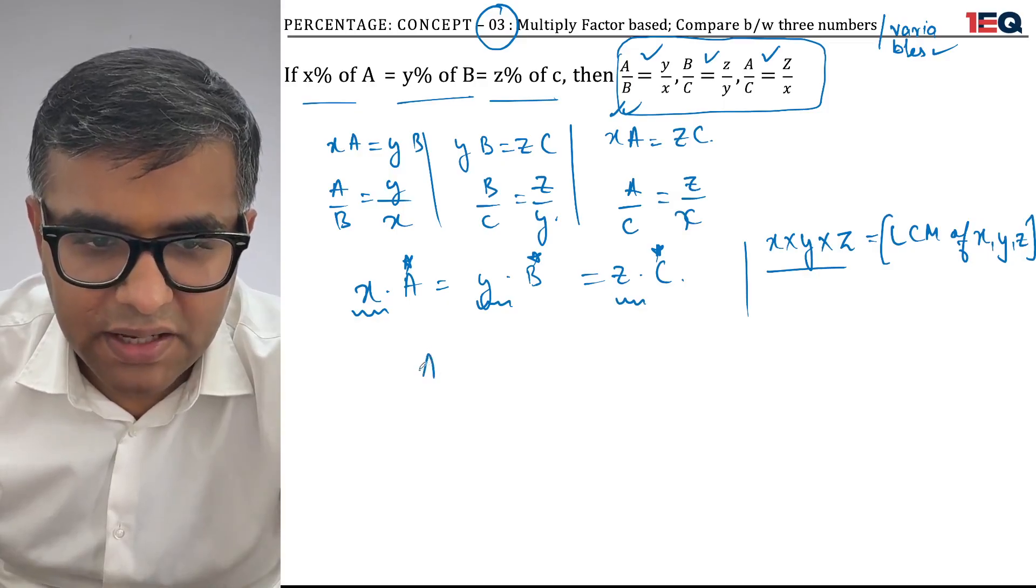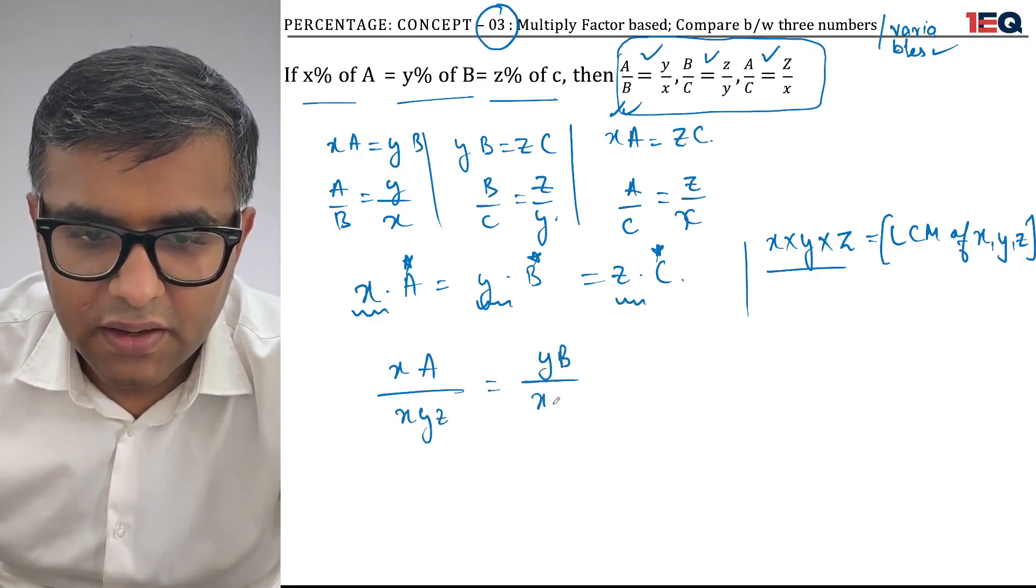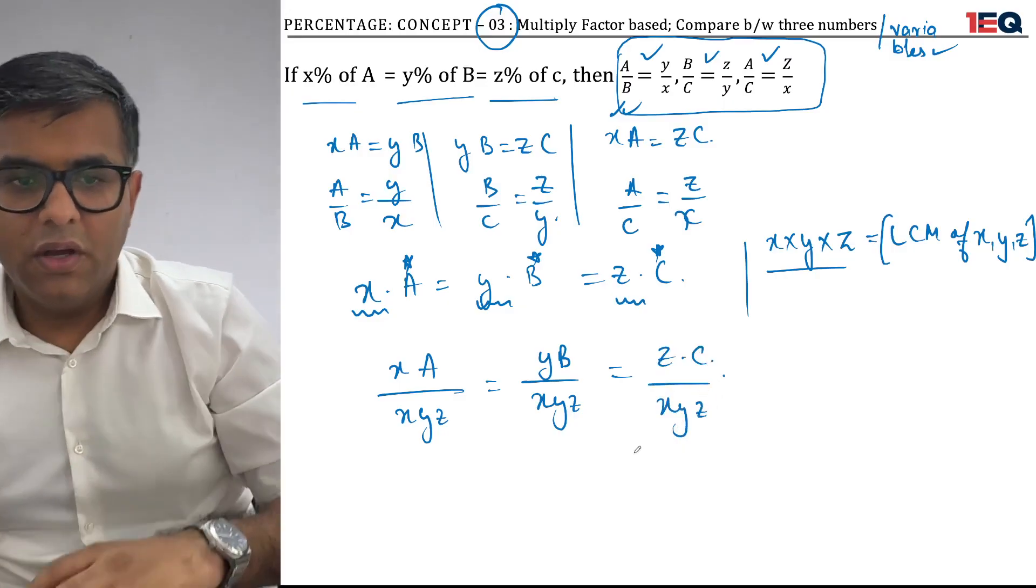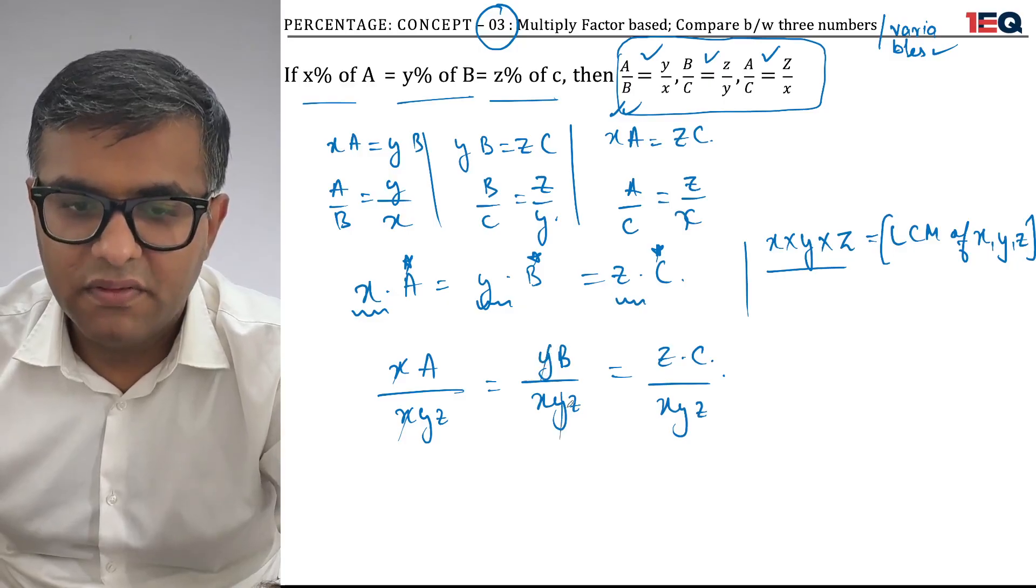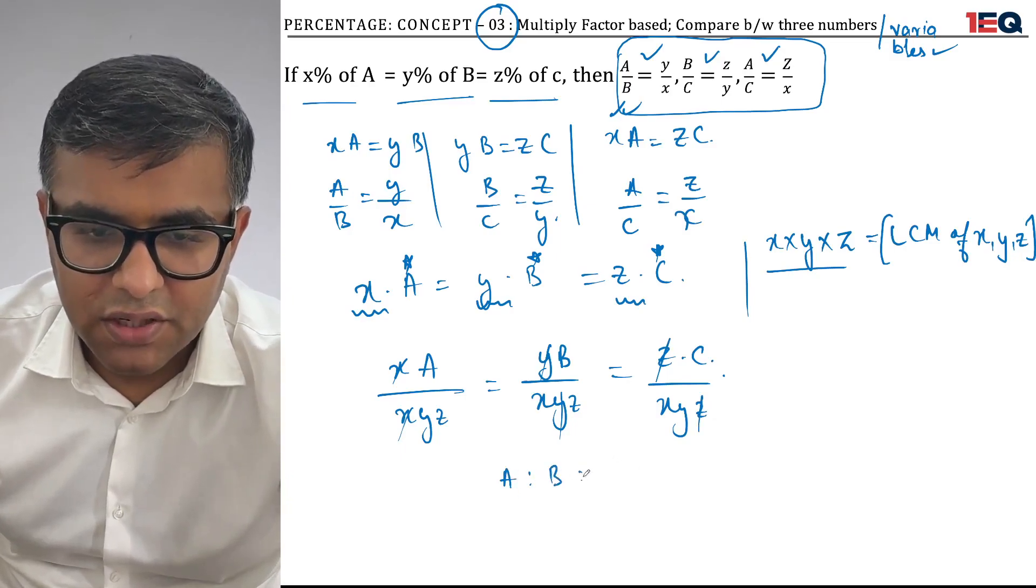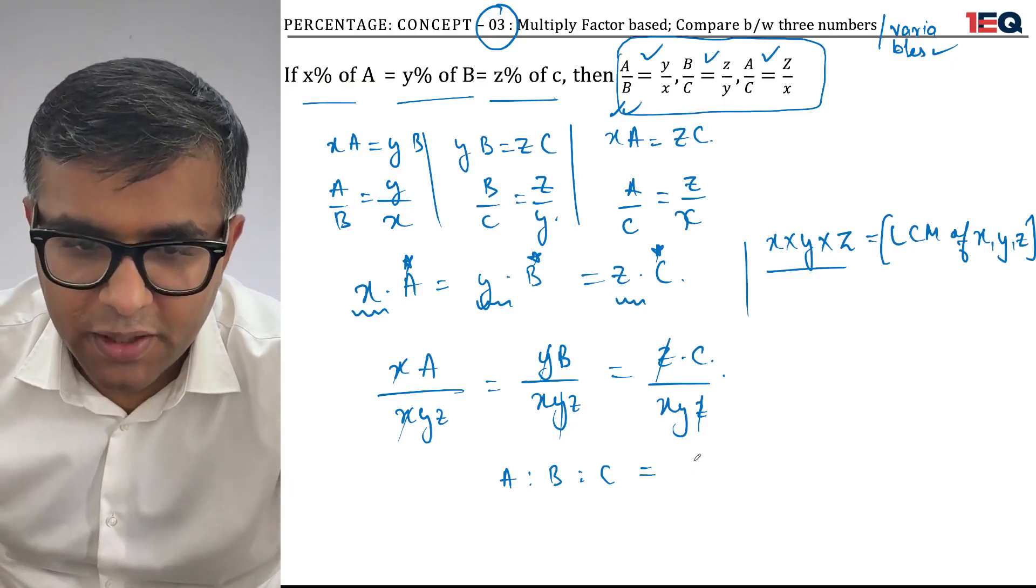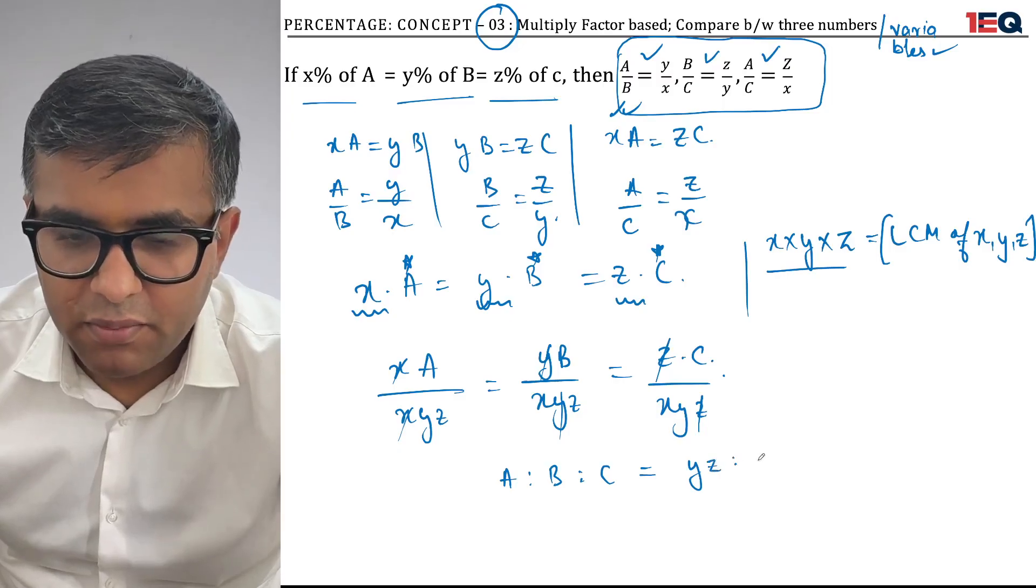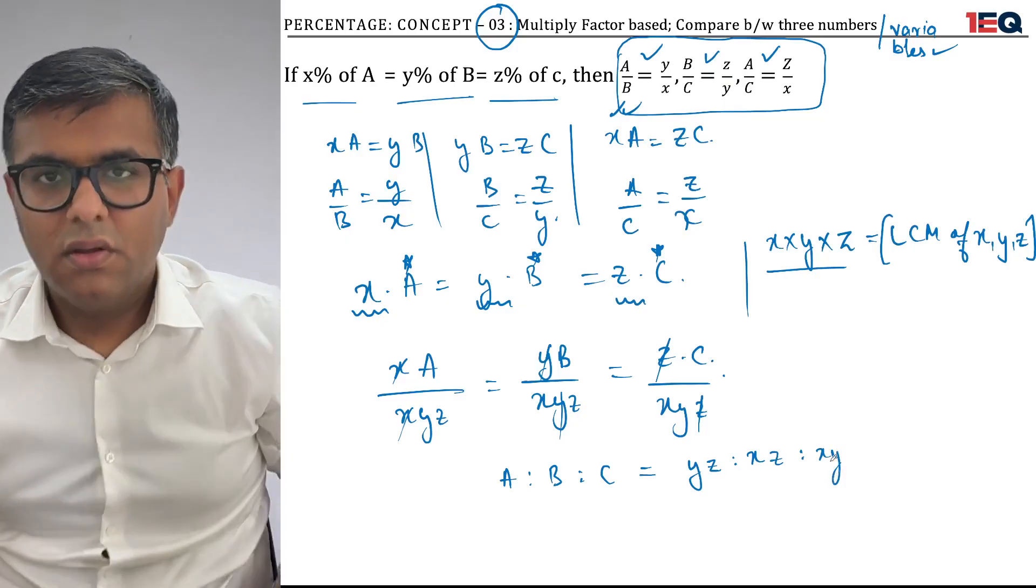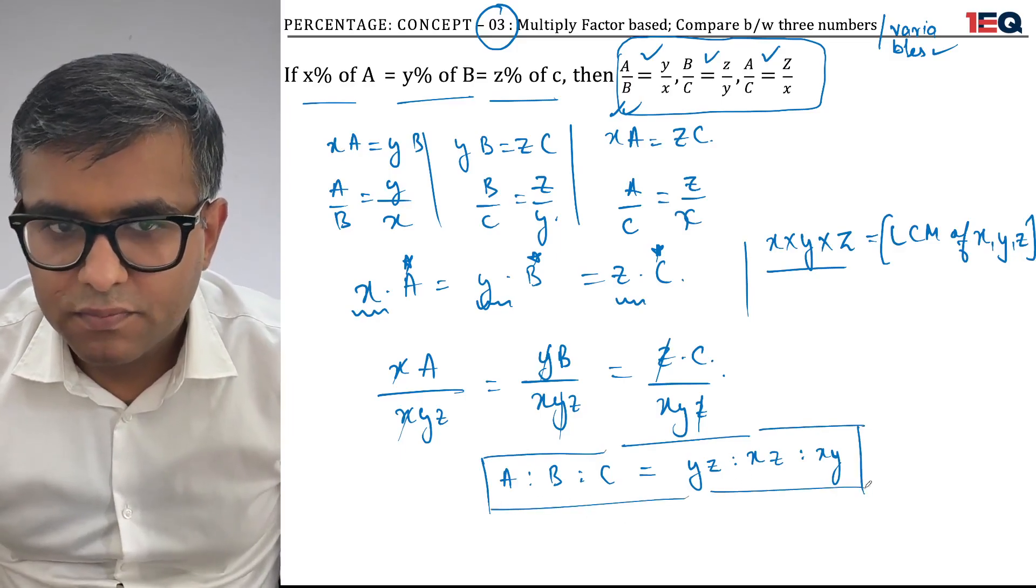I'm going to divide the entire equation by x, y, and z. So x times A divided by xyz equals y times B divided by xyz equals z times C divided by xyz. Cancelling out the common terms, when A is ratioed to B is ratioed to C, the absolute value we reach is A is to yz, B is to xz, and C is to xy. You can remember this solution. There is a quicker way of arriving at it.